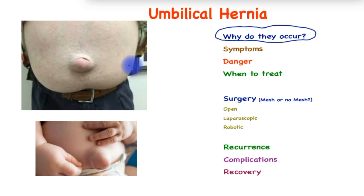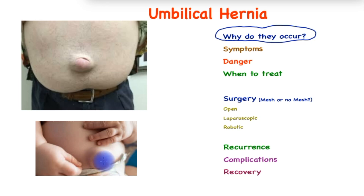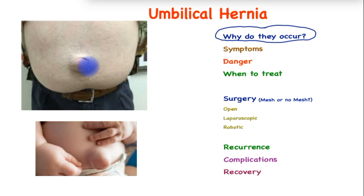There are two distinct varieties of the umbilical hernia. The umbilicus, or belly button, is the point at which the baby is connected to the mother, through which nutrition enters the baby and waste products leave the body. Hence it is a site of weakness, and babies end up having a belly button hernia. In adults, however, this area of weakness less commonly gives way to a hernia.